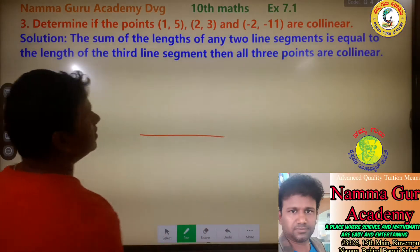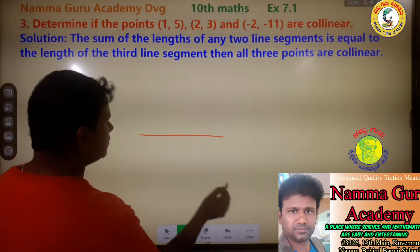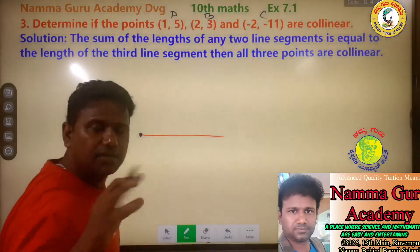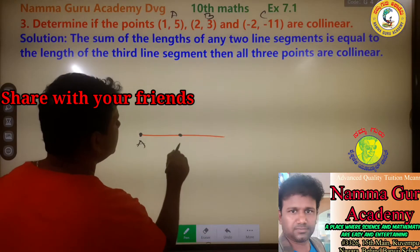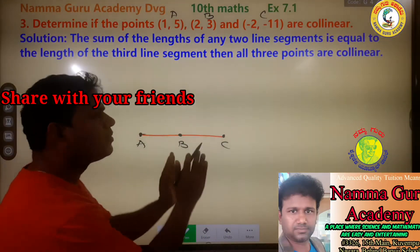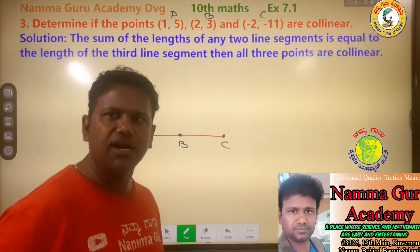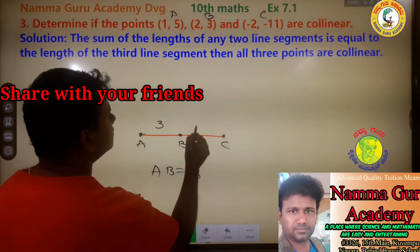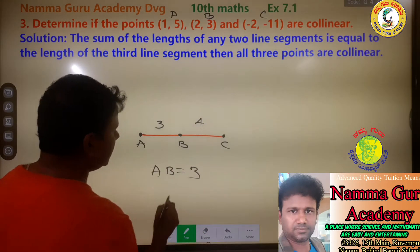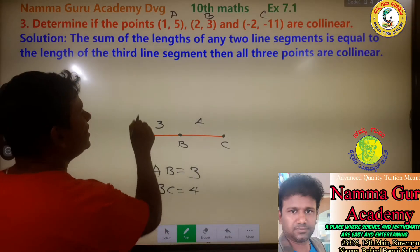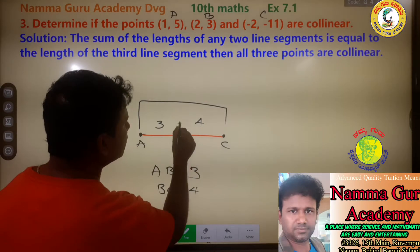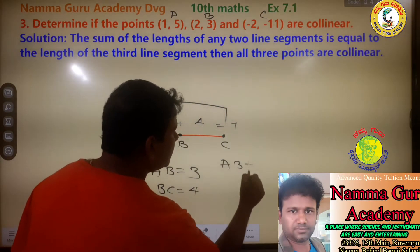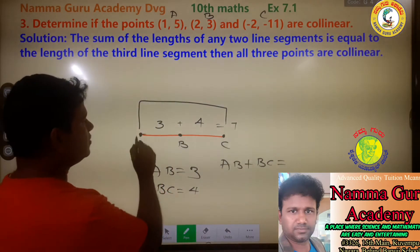Collinear means the points lie on a straight line. We label the points A, B, and C. If AB plus BC is equal to AC, then the points are collinear.